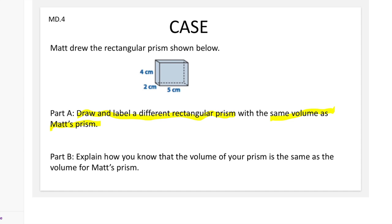Now I'm going to be chunking Part B: Explain how you know that the volume of your prism is the same as the volume of Matt's prism. I'm going to be chunking: explain how you know volume of your prism same as the volume Matt's prism. Now I can cross off the C because I am done chunking.